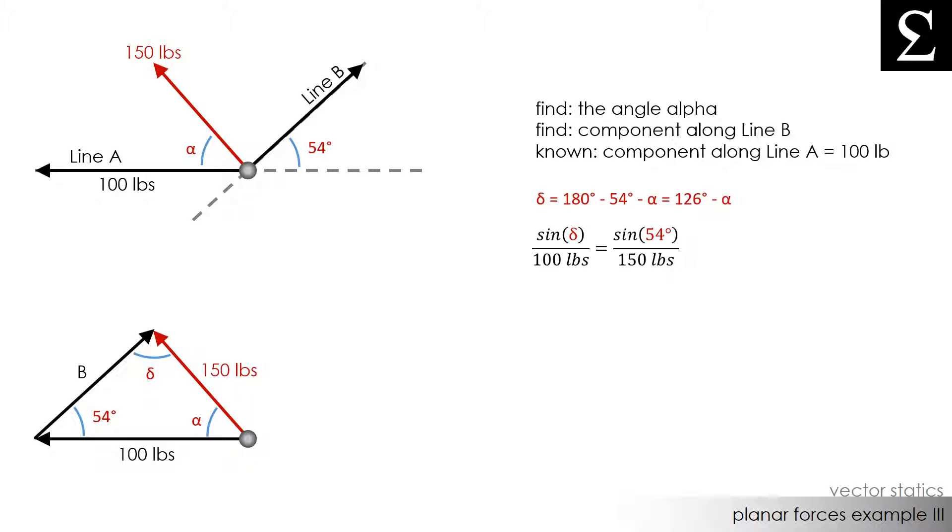We actually have an expression for delta, so I'll substitute that here. Our delta angle is 126 degrees minus whatever the value of angle alpha is. Now if we solve this equation out, we find that angle alpha equals 93.4 degrees.